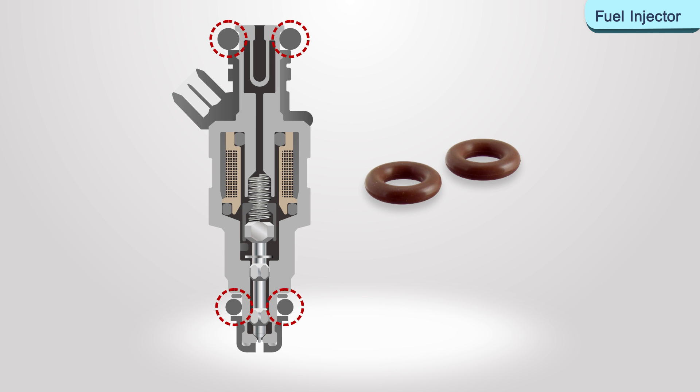O-rings are used to seal the injector at the manifold and fuel rail. A plastic insulator may be used to provide some thermal insulation from engine heat.